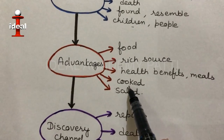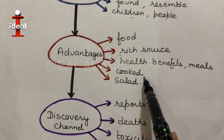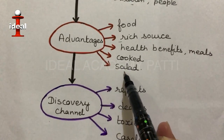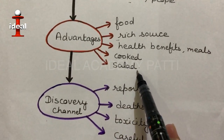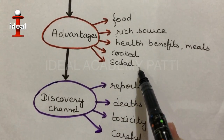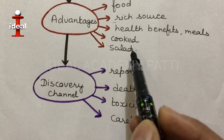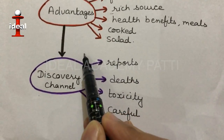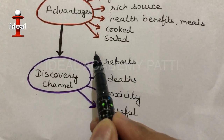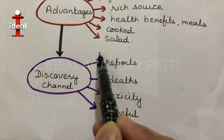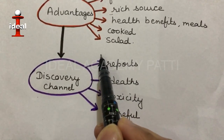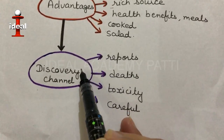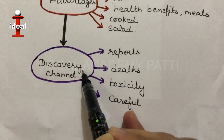Because of its health benefits, people add mushrooms to their meals and it is cooked in different styles. Sometimes it is taken raw as a salad because of its health benefits. However, the Amanita phalloides mushroom is highly toxic and the poison in it can cause critical health problems.